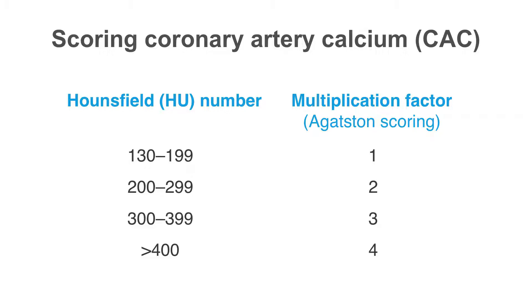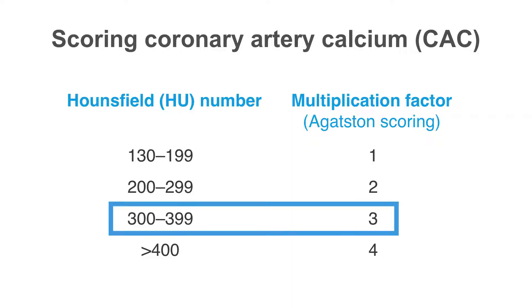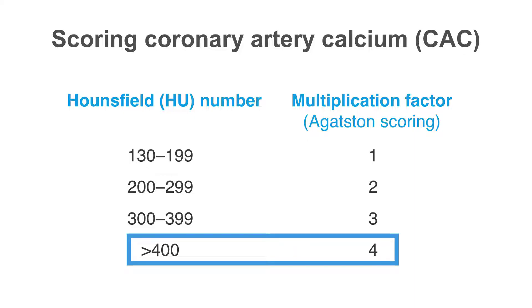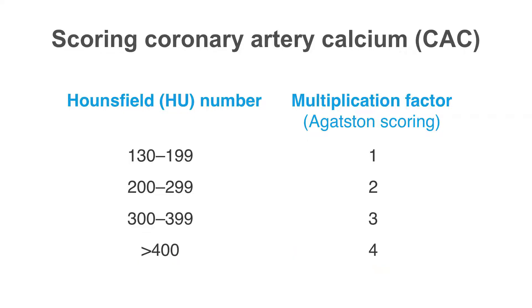After a coronary calcium scan is acquired, this requires quantification using a system developed by Arthur Agatston. This takes the mean Hounsfield unit of the calcified plaque being evaluated and, depending upon the value, attributes a multiplication factor. For example, if a calcified plaque had a Hounsfield unit of 320, the multiplication factor would be 3; if 600, the multiplication factor would be 4, and so forth.